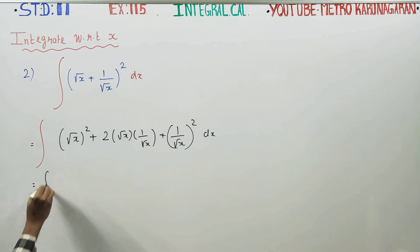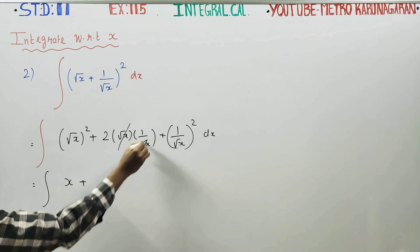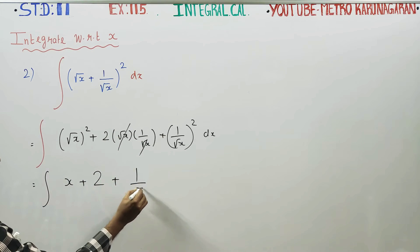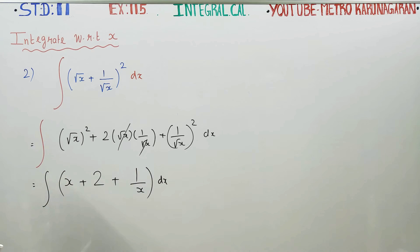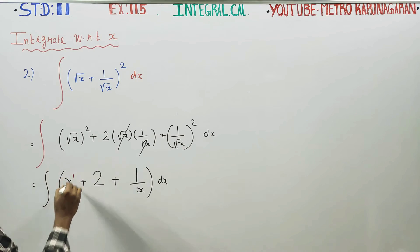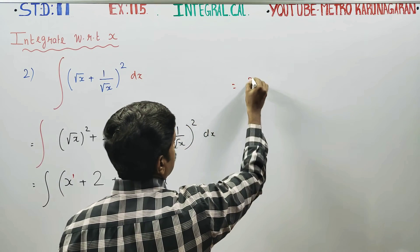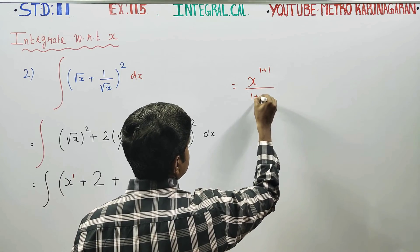Integration of x becomes x. It cancels to become 1 by x dx. Direct integration starts. Integrate x power 1: x power 1 plus 1 by 1 plus 1.